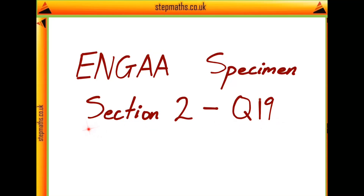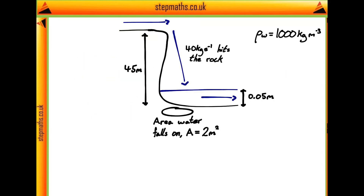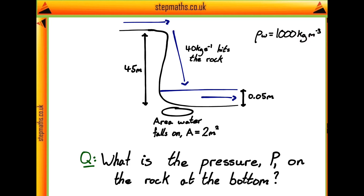Here we're going to look at question 19 from section 2 of the Engr specimen paper. In this question we're told that we have a waterfall where 40 kg per second of water is going over the waterfall and hitting the rocks below. The water is falling a height of 45 metres before hitting these rocks, where it hits them across an area of 2 metres squared. We're also told that the water just above the bottom of the waterfall is at an average depth of 0.05 metres, and the density of water is 1,000 kg per metre cubed. The question asks us: what is the pressure P on the rocks at the bottom of the waterfall?